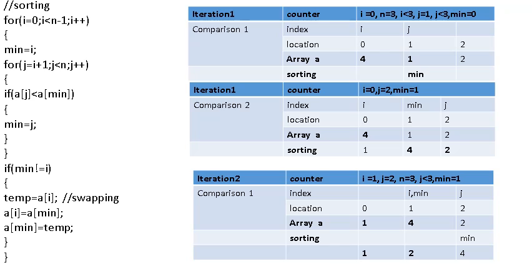Now we check if minimum is not equal to i. Initially minimum was set to i, but we found a new minimum. Minimum is 1, i is 0, so 1 is not equal to 0 — condition is true, so we swap. temp equals a[i], which is a[0] with value 4, stored in temp. Then a[i] equals a[minimum], so a[0] gets value 1. Then a[minimum] gets value 4 from temp. So 1 and 4 are swapped. The array is now 1, 4, 2.